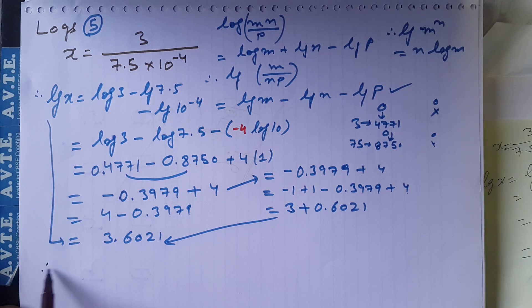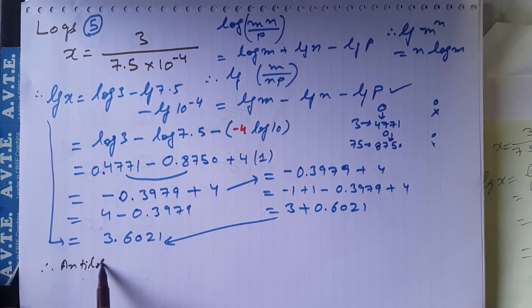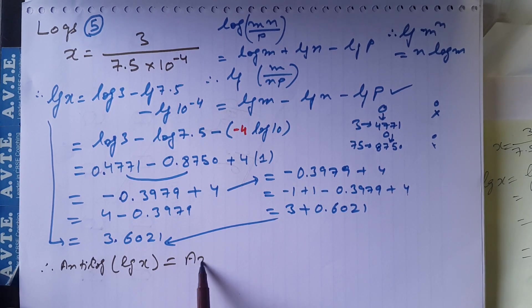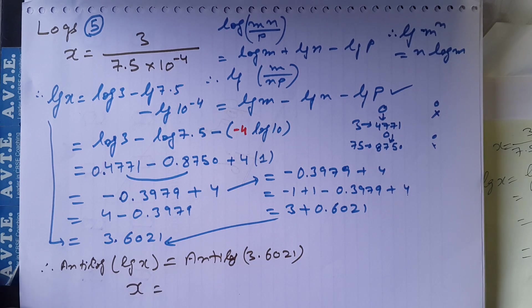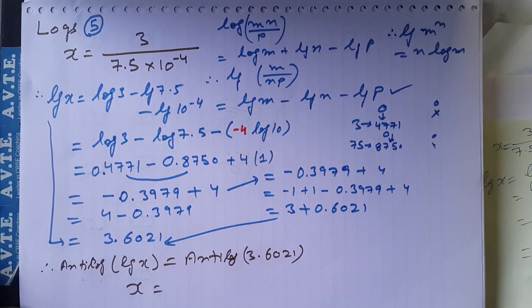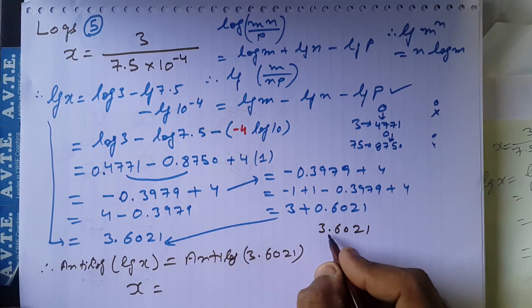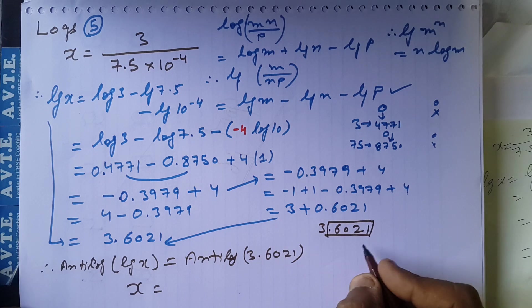Now we have to apply antilog. So antilog of log x is equal to antilog of 3.6021. Antilog of log x is x, and we have to see the antilog of 3.6021. I told we don't have to see from 3 point, we have to see only 0.6021.